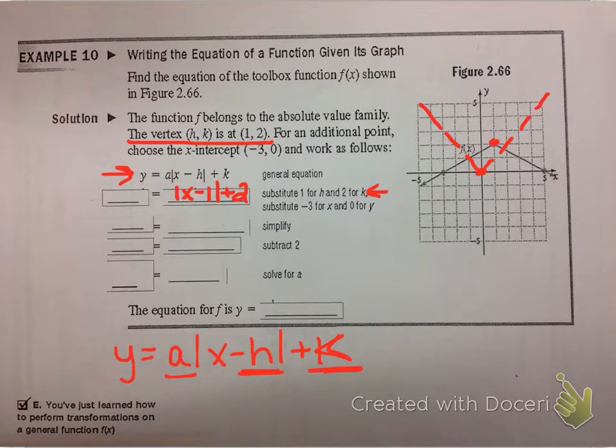Okay, and then what they had you do was they had you choose another point on the graph. It says for an additional point, and you can choose any one you want to. What they chose was the x-intercept negative 3, 0, so they chose this point right here. And what they did is they plugged it into the equation, so they tell you to do that right here. It says substitute negative 3 for x and 0 for y.